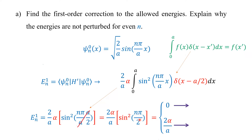So you will get sin^2(n*pi/2). This is equal to zero for even n, because sin(n*pi/2) is zero when n is even. For odd n, it is equal to 2*alpha/a, because for odd n the sin^2 value becomes 1, so this will be 2 times alpha divided by a. This is the first-order energy correction.